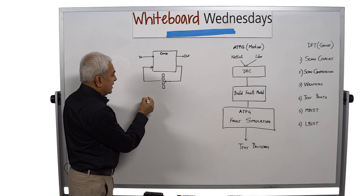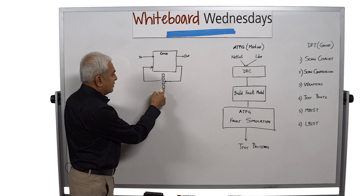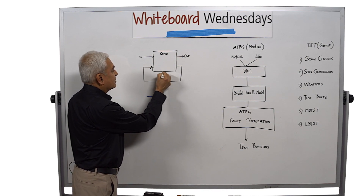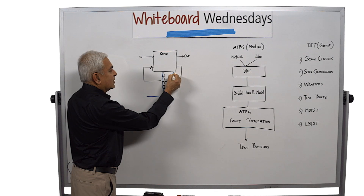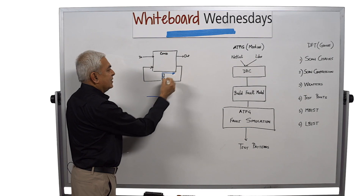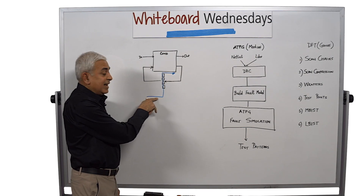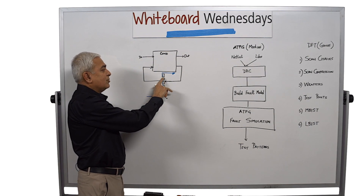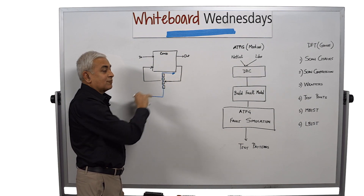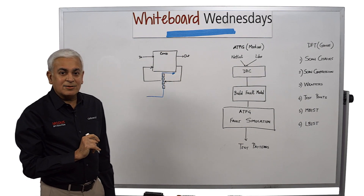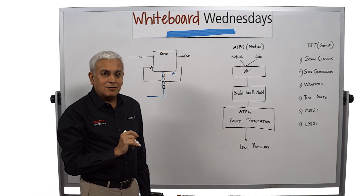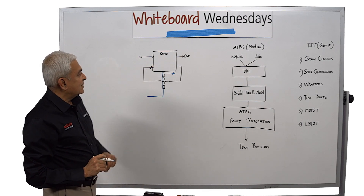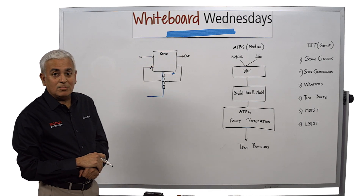what we do is take all these flip-flops and put them in a shift register, which we call a scan chain, so that we can scan in any value into these flip-flops and scan out any value from those flip-flops. As a result of that, for the purposes of test, this particular design has become combinational.